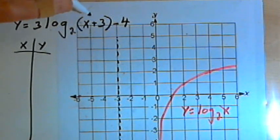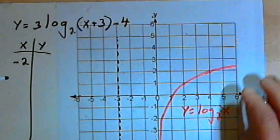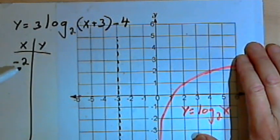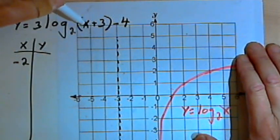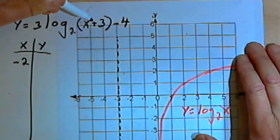I'm going to use x equals negative 2 to look for a point. The reason I'm doing that is when x is negative 2, then x plus 3 is 1. And the log of 1, no matter what the base is, is always going to be 0. So this will be an easy one to find.